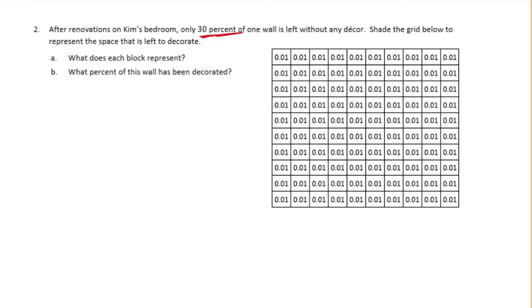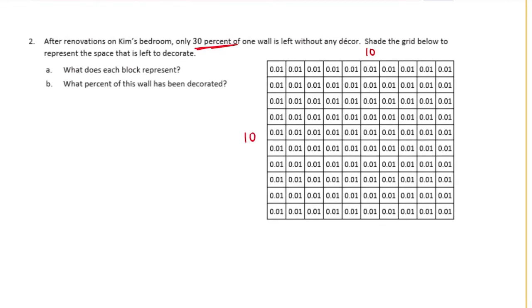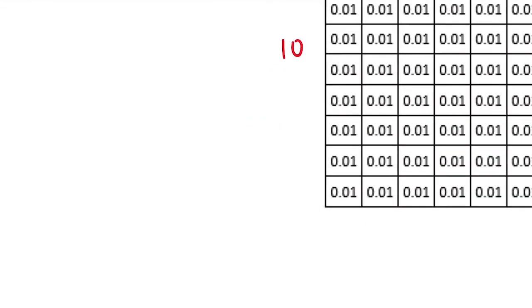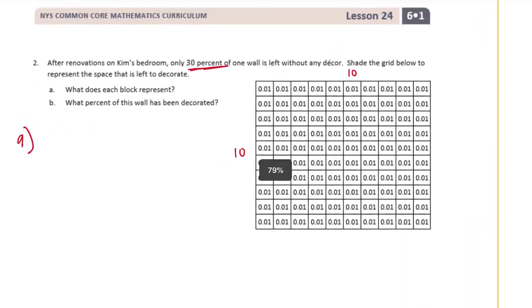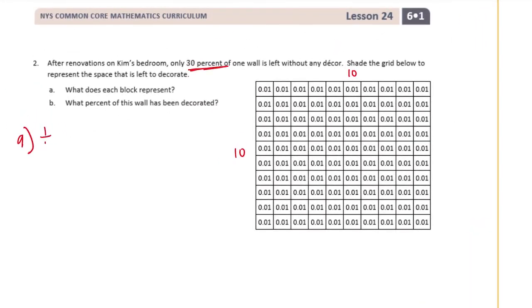So 30%. So again, this is a 10 by 10, which means that there are 100 in there. So each block, let's start with this A, what does each block represent? So each block is, each block is 1 100th of the total wall or 1%.